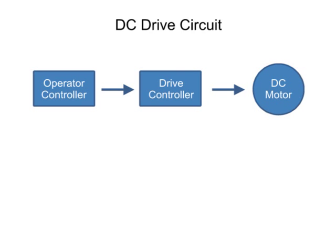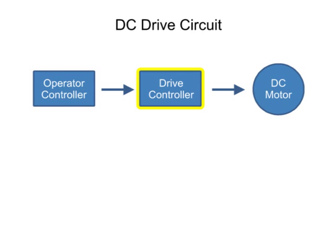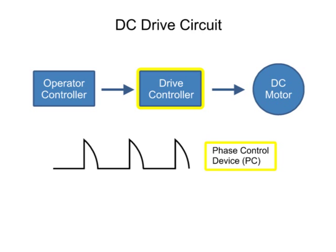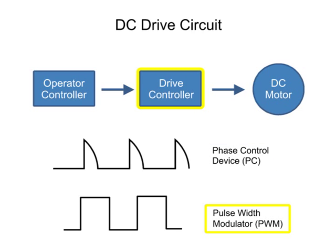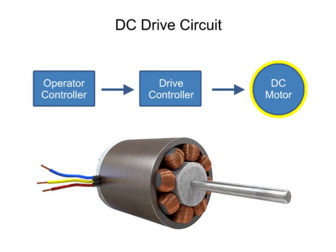One of the functions an operator controller provides is a method for altering the speed of the motor. The drive controller will regulate the input by means of either a phase control device or a pulse width modulator. And the DC motor can be an electrical device that needs to be adjusted to perform at various speeds.